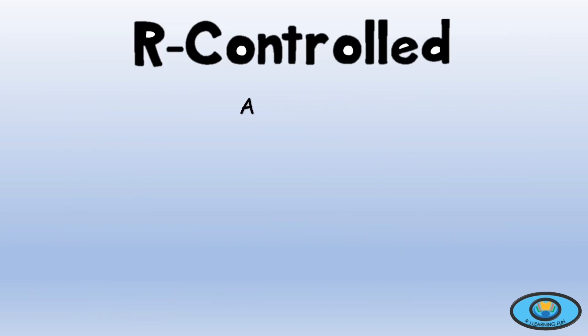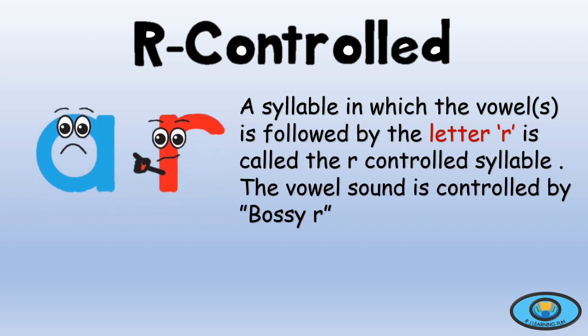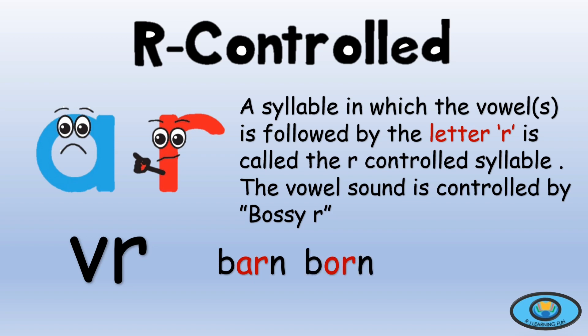Next is the R-controlled syllable. A syllable in which the vowel or vowels is followed by the letter R is called an R-controlled syllable. The vowel sound is controlled by bossy R — it is neither long nor short but controlled by R. This type is represented by VR. For example: 'barn' — A is not making a long or short sound but a different sound controlled by R. 'Board' — when R comes with vowel O, they make the sound OR. 'Bird' — IR makes the ER sound.